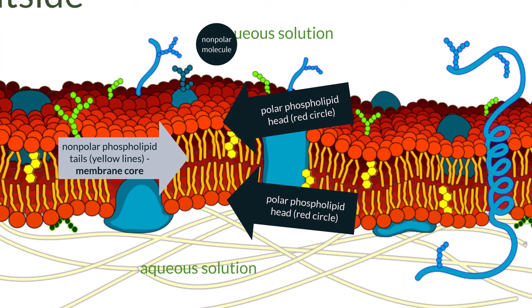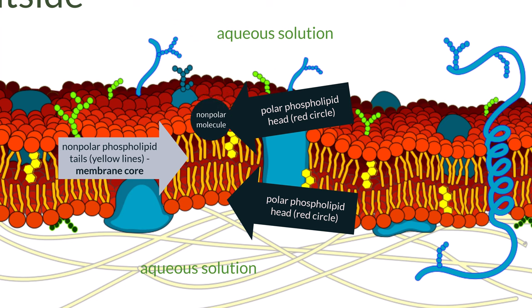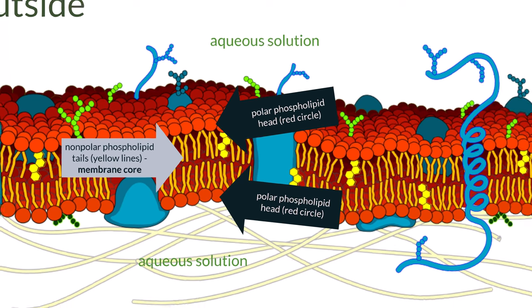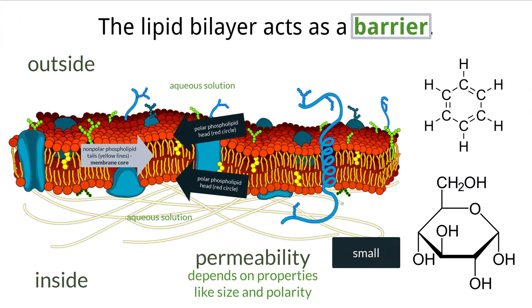If polar molecules get close to this region, their attraction to other polar substances will pull them away from the nonpolar region, resulting in them not passing through the membrane, making it function as an effective barrier between the two aqueous solutions. Nonpolar substances, on the other hand, have higher permeability because they are attracted to this region and can therefore pass through it. When it comes to size, it's easier for smaller molecules to slip through the membrane than larger ones. Small, nonpolar molecules have a much higher permeability than large, polar molecules.